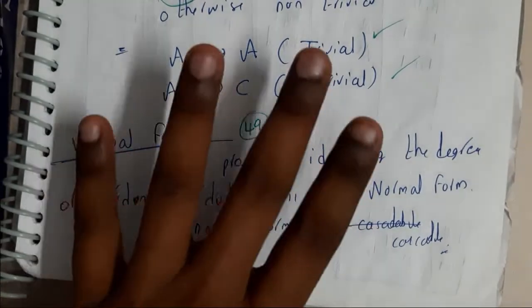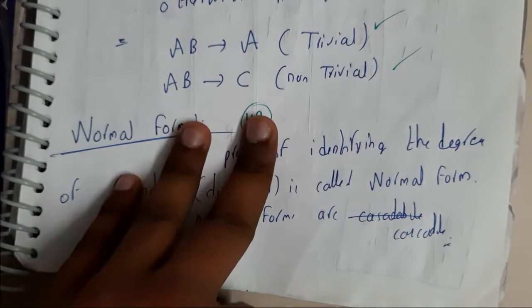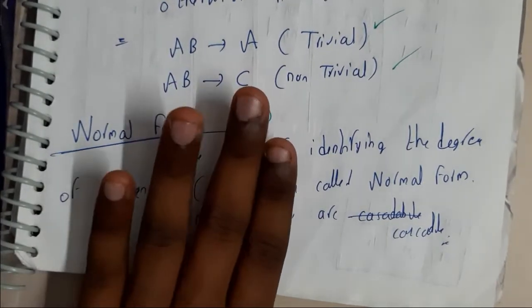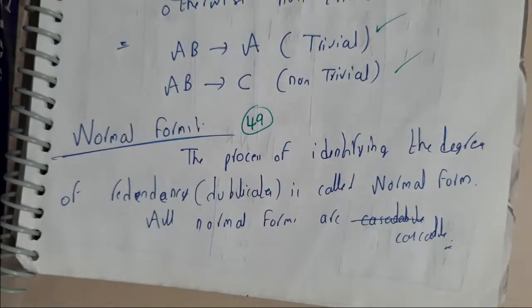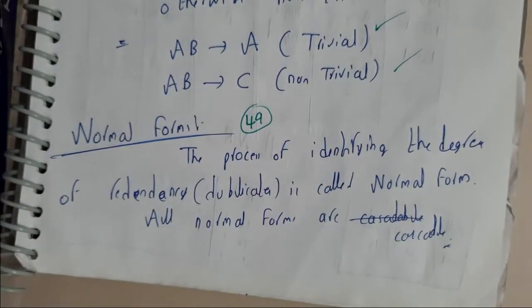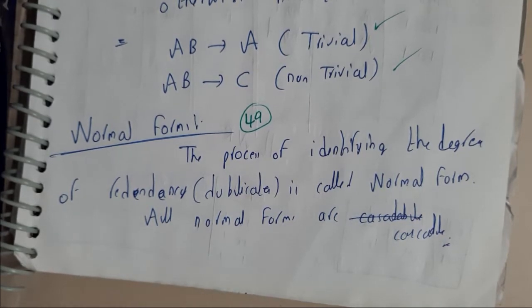We will be discussing till four normal forms only, that is first normal form, second normal form, third normal form, and Boyce-Codd normal form. Whichever are following these four normal forms we can say that they are having the least amount of redundancy. Redundancy is nothing but duplicate copies.